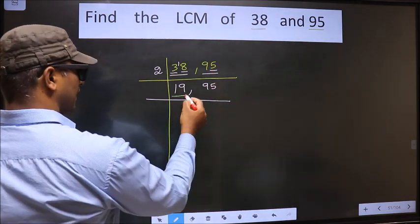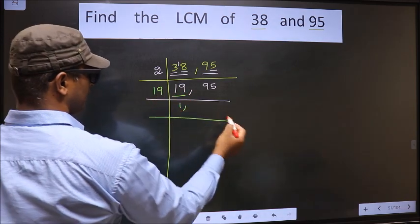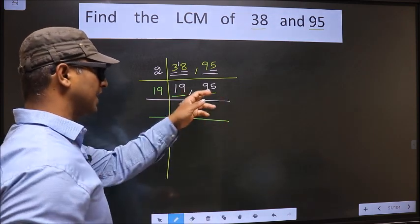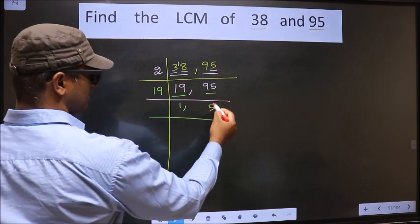Now we have 19 here. 19 is a prime number, so 19 1s 19. The other number 95. When do we get 95 in 19 table? 19 5s 95.